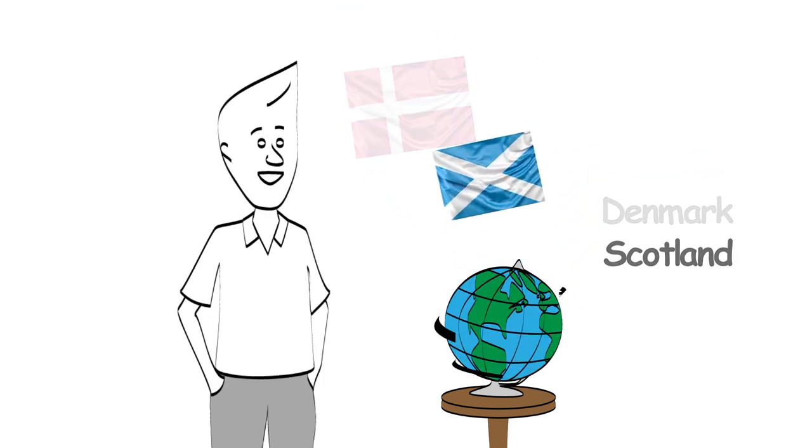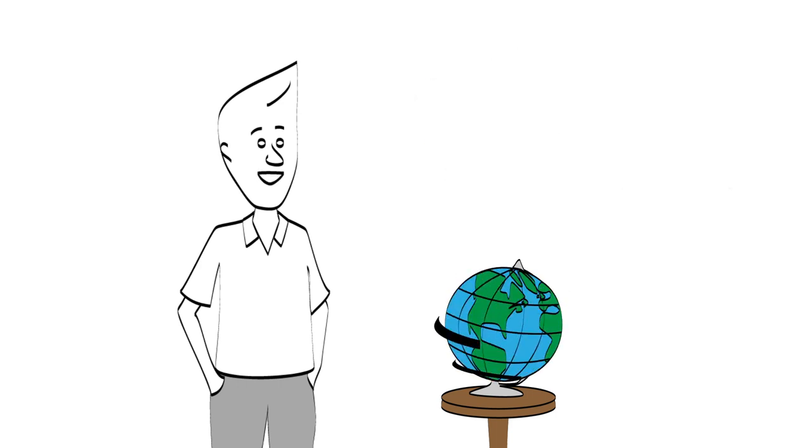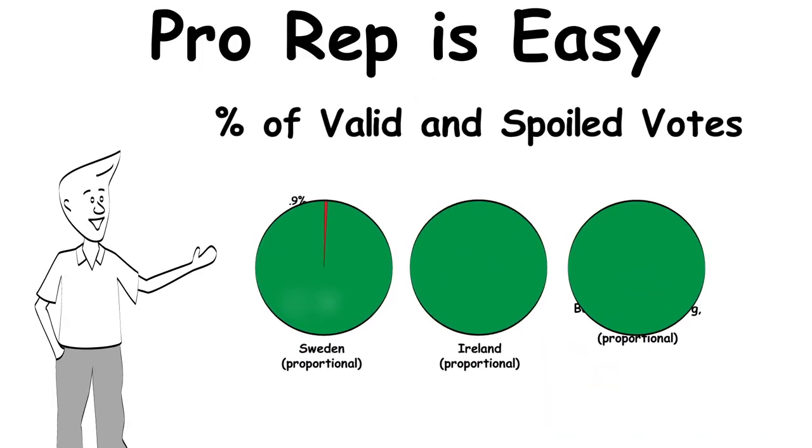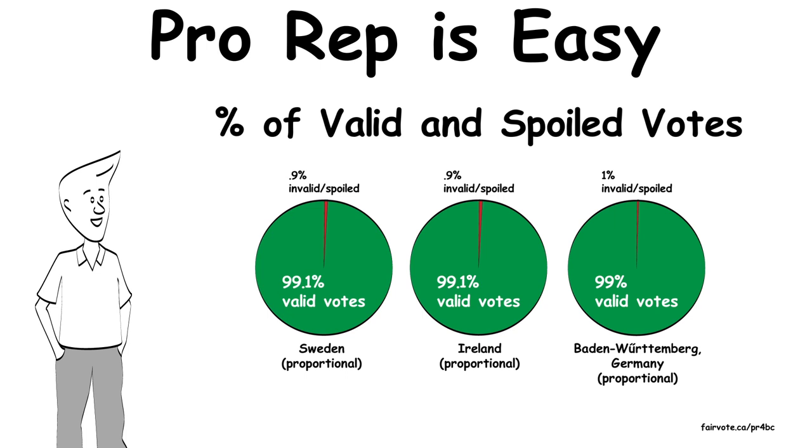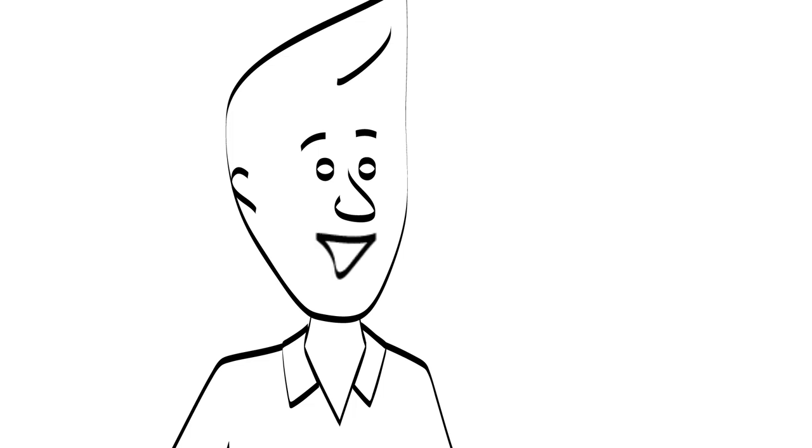Voters in PR countries have no more difficulty using their ballots than Canadians. The rate of spoiled ballots in countries with pro-rep is very low, often under 1% comparable to Canada, showing a strong understanding of the system. And some of those spoiled ballots are voters who are simply unhappy with any of the choices.